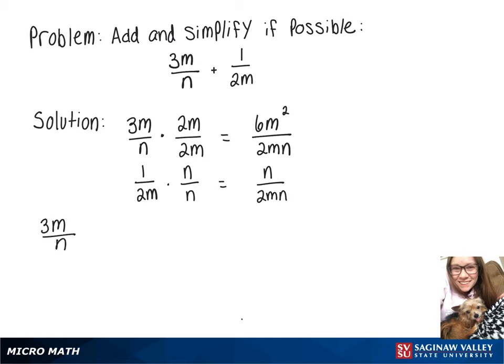So now we can rewrite our original problem of 3m over n plus 1 over 2m as 6m squared over 2mn plus n over 2mn.